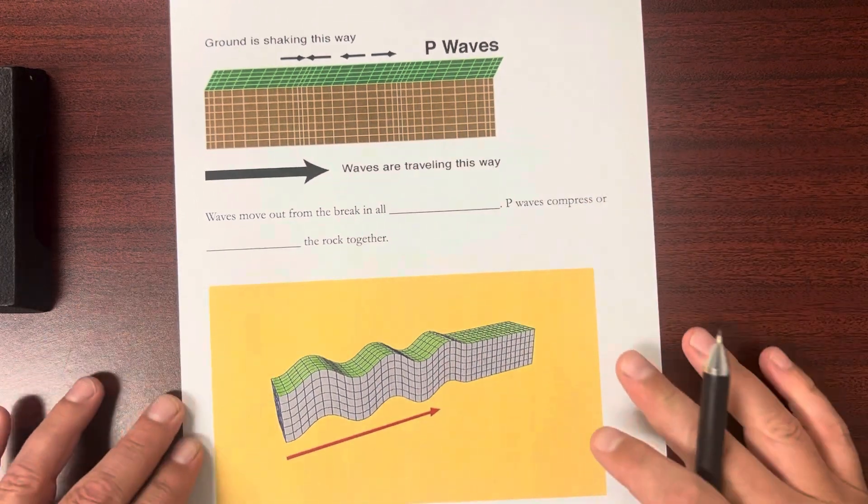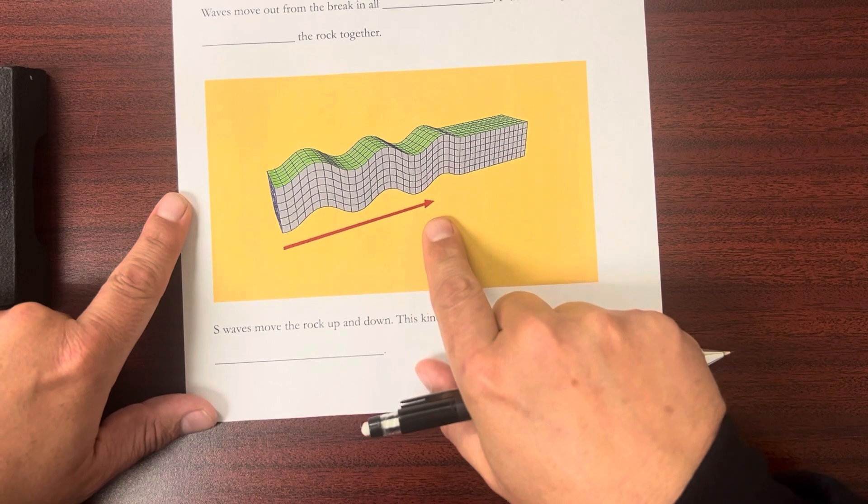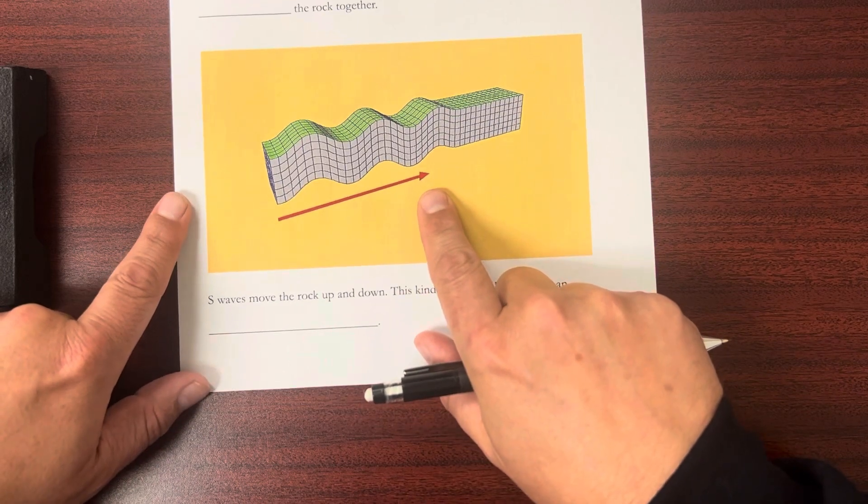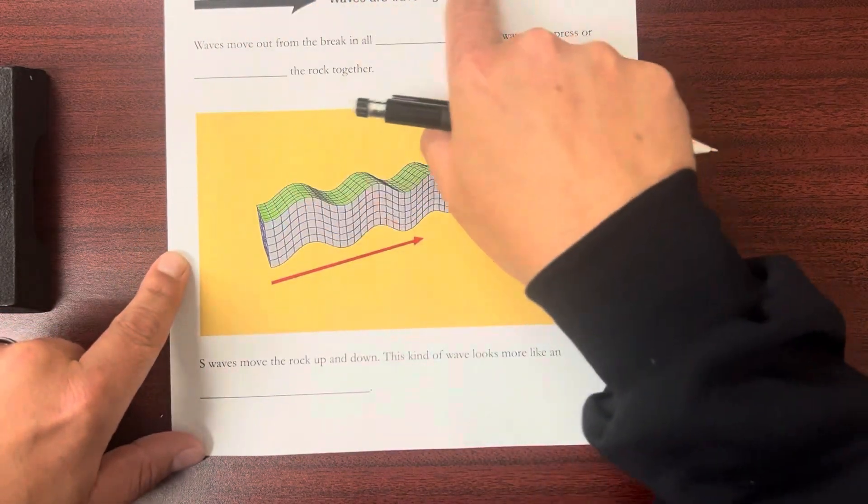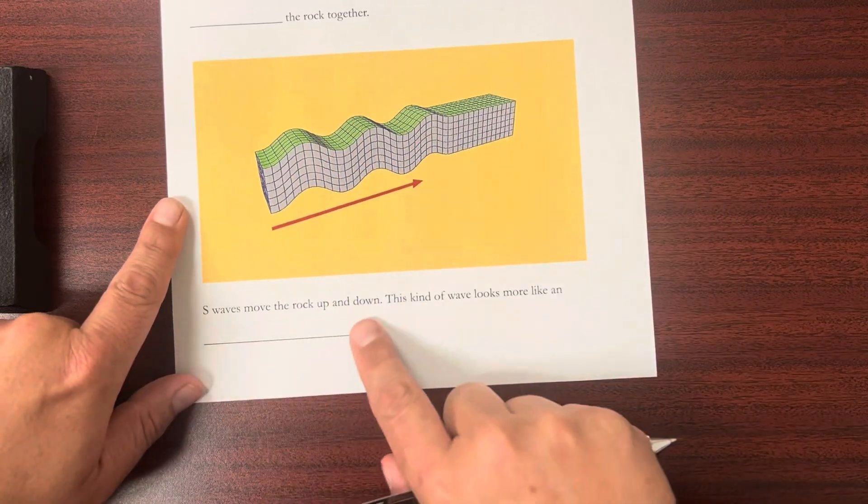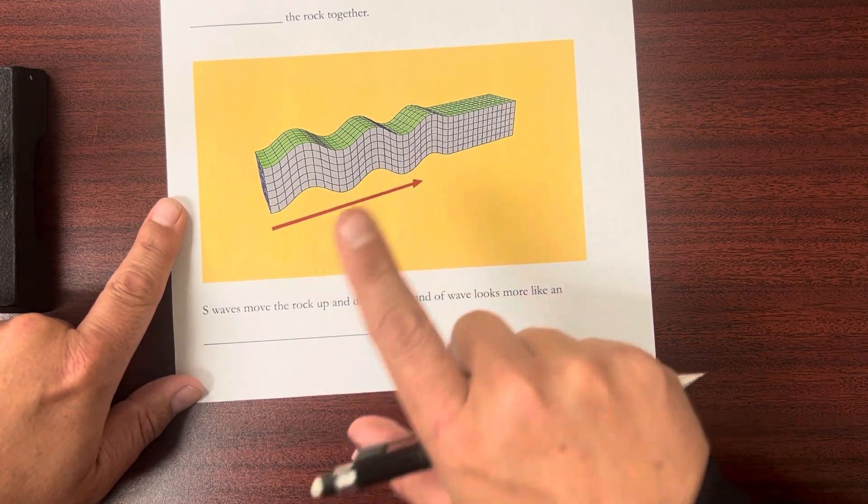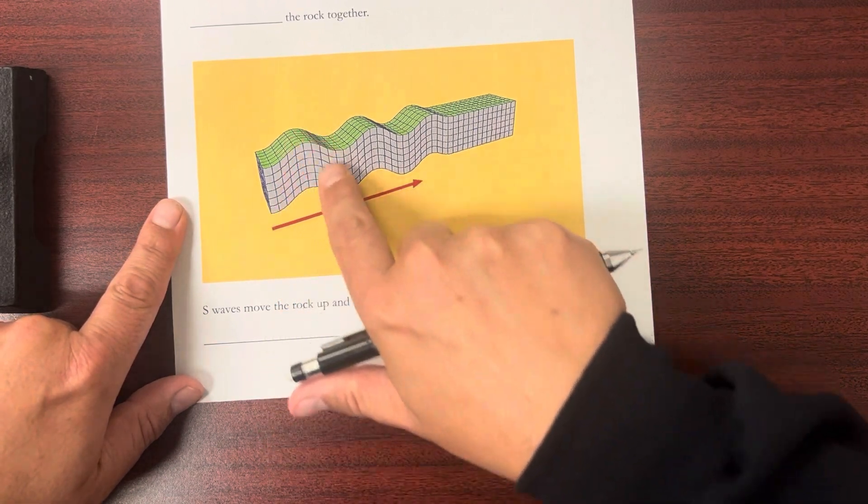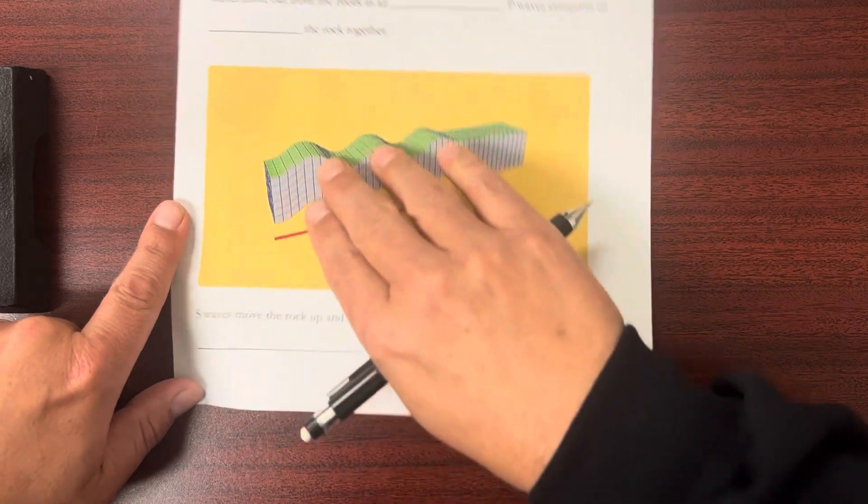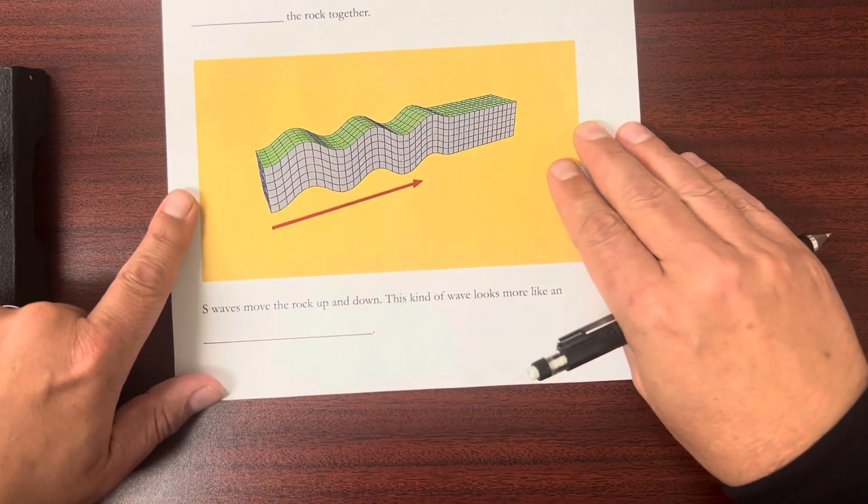Now, there's other types of waves. In this case, S waves. And S waves don't move like P waves. S waves move kind of up and down. So S waves move up and down. This kind of wave looks more like an ocean wave. You know how an ocean wave also moves up and down. And those waves move just like an ocean wave. They propagate out from the epicenter.